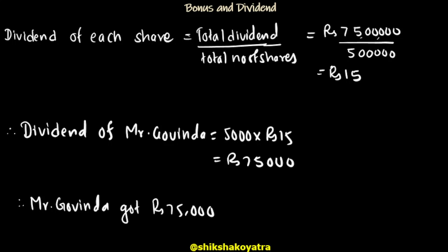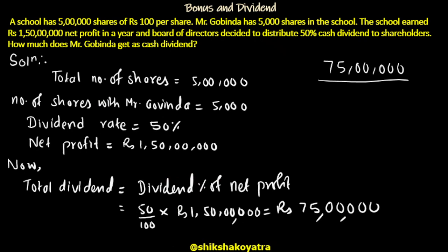Each share earns 15 rupees. Mr. Govinda has 5,000 shares, so 5,000 multiplied by 15 gives his total dividend. The total number of shares is 5 lakh; Govinda has 5,000 shares. Dividend rate is 50% of net profit, which is 1.5 lakh.